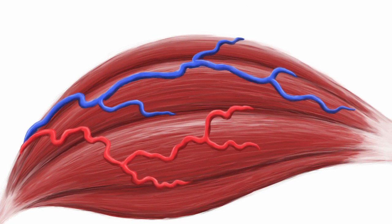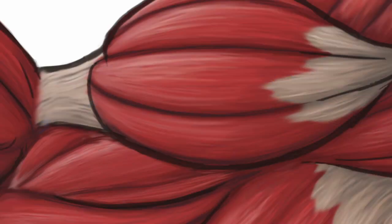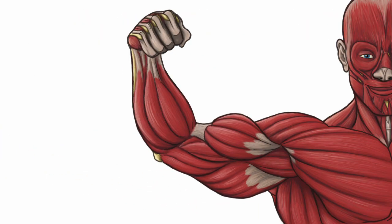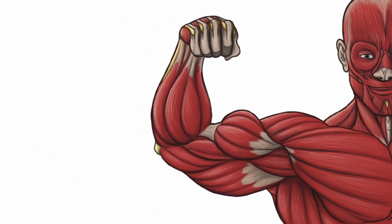Additionally the blood vessels also increase in size and the neurons form stronger connections to better contract the muscles, what we call muscle memory. And that is the process of hypertrophy and how your body builds muscle.